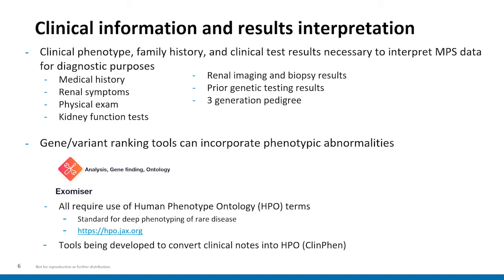Throughout the paper, these authors really emphasize the importance of clinical information in the interpretation of genetic diagnostic testing results. They advise that clinicians should provide as much information as possible related to medical history, renal symptoms, age of onset, course of disease, physical exam, kidney function tests, imaging, biopsy results, and any prior genetic testing results. They also suggest that family history be collected with a three-generation pedigree.